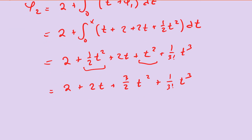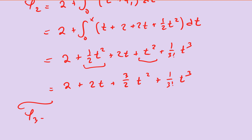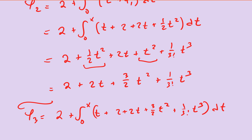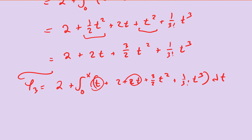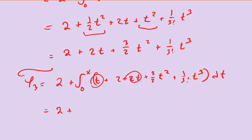Let's do another iteration to start generating a pattern. φ₃ equals 2 plus the integral from 0 to x of t plus 2 plus 2t plus three-halves t squared plus 1 over 3 factorial t cubed, integrating with respect to t. Combining t and 2t, the integral of 2 is 2t, the integral of 3t is three-halves t squared, the integral of three-halves t squared is 3 over 3 factorial t cubed, plus 1 over 4 factorial t to the fourth, evaluated at x.